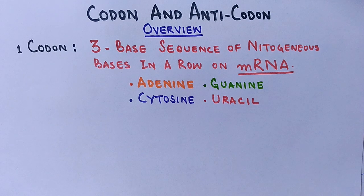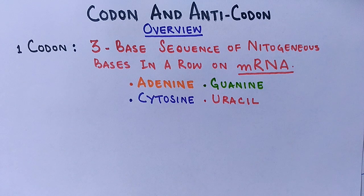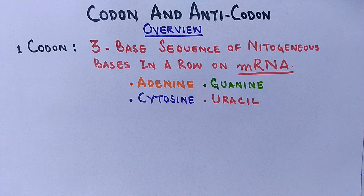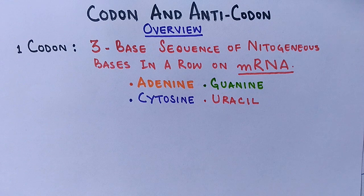So a codon is a three-base sequence of any of these ribonucleotides — it may be AGC, GCA — but only a three-nucleotide sequence defines something. For example, AUG defines the initiation codon for methionine, but a four-base sequence like AUGA defines nothing. It is specifically a three-base sequence that codes for amino acids.